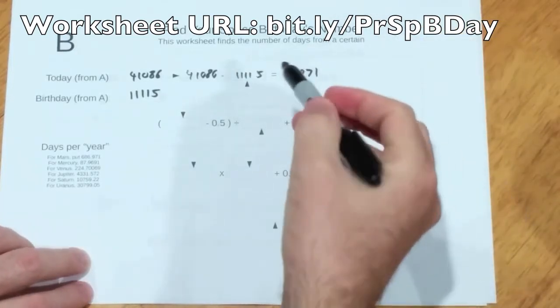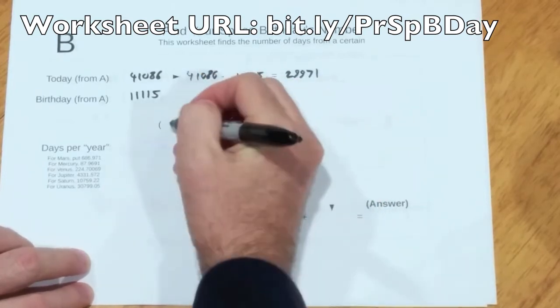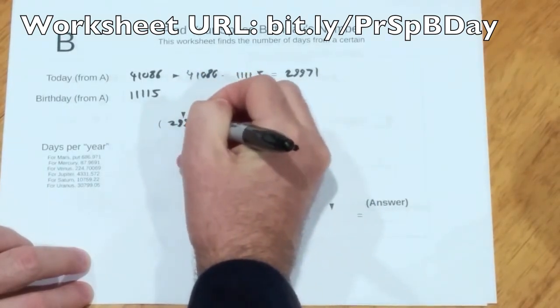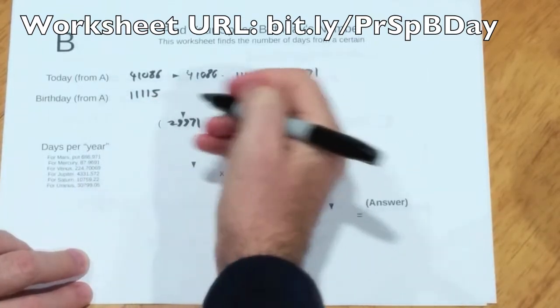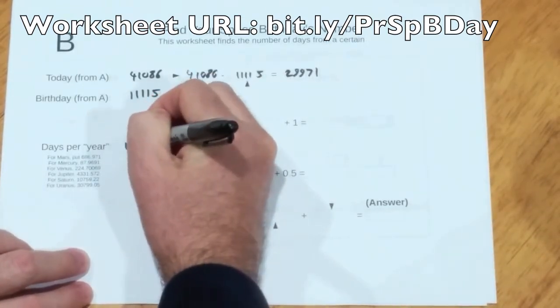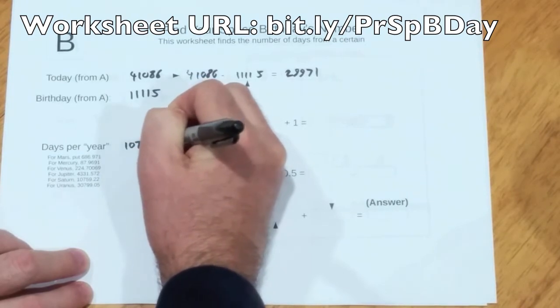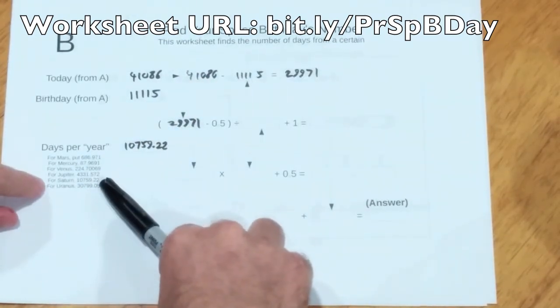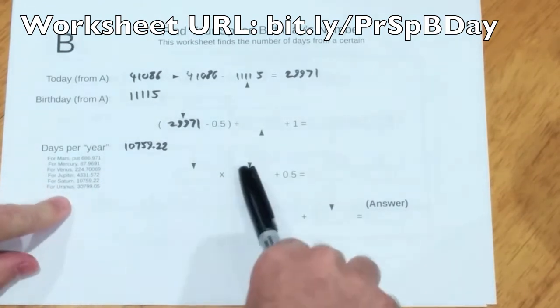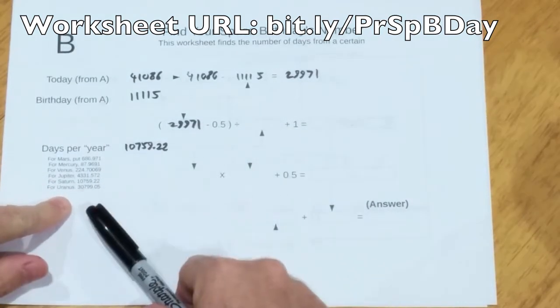41086 minus 11115 is 29971. Now, this number here gets copied down here. We're going to convert this to a number of years for Saturn. Let's say Saturn, 10759.22. That's the number of days in one Saturn year.